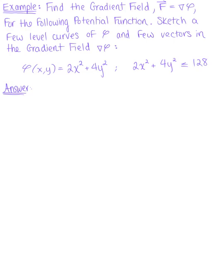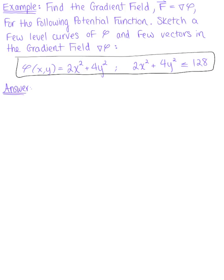Find the gradient field for the following potential function, and sketch a few level curves of phi and a few vectors in the gradient field. We are given the potential function φ(x, y) defined by 2x² + 4y², such that 2x² + 4y² is less than or equal to 128.